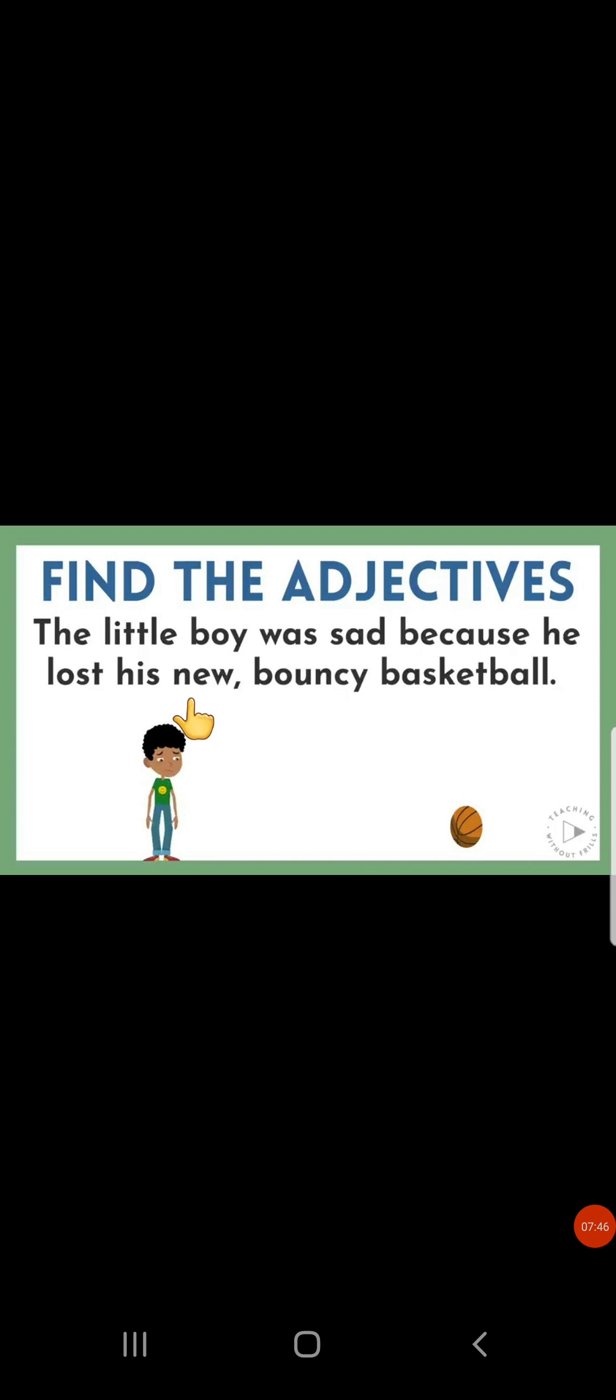These two are adjectives because they are giving you the information about this noun boy. Now, come to next line. This is a basketball. It is a noun. And what are the words which are describing about this basketball? Yes, bouncy and new. So, these both are adjectives because they are describing or giving you the information about basketball. There are all together four adjectives in this sentence. Little, sad, new, bouncy. Very easy and very interesting.